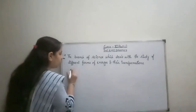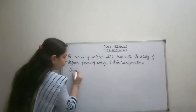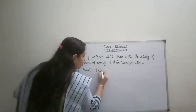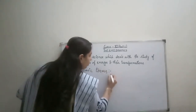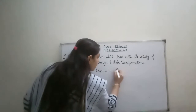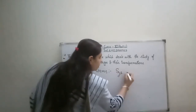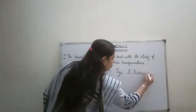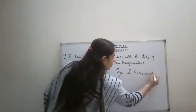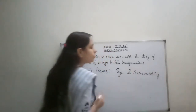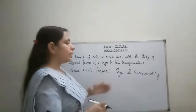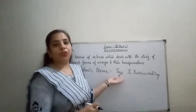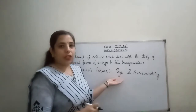The basic terms we are going to discuss — first is system and surrounding. What is a system? System is that part of the universe which is under observation. The portion that we want to observe, that portion is termed as the system.